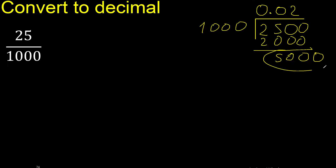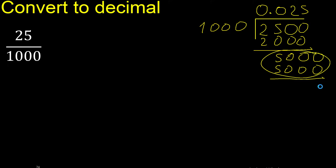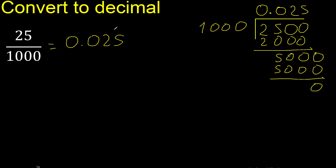Point is here. 5000 divided by 1000 — multiply by which number? Multiply by 5 is 5000. Subtract: 0. Therefore finish.